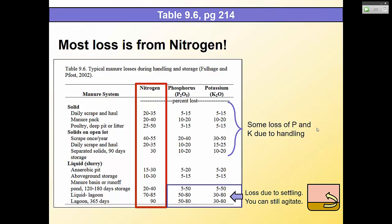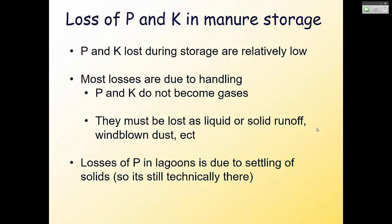Most loss within manure storage is from nitrogen, because nitrogen can become a gas and leave the system. A liquid lagoon can see 70% to 85% nitrogen loss over time, versus lower losses from dry systems. Phosphorus and potassium losses are mainly due to handling — loss with liquid or solid runoff, blown dust, or settling of solids. In a lagoon, the 30% to 80% loss of phosphorus and potassium is because it settled to the bottom — it just needs to be agitated. Phosphorus and potassium losses in storage are relatively low otherwise.